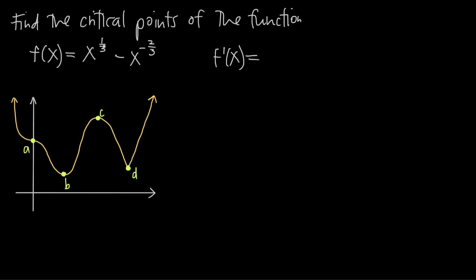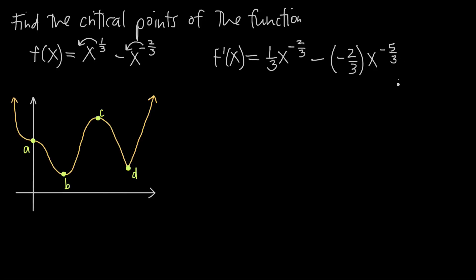When we take the derivative of x to the 1/3rd, we bring the exponent down in front, so we get 1/3 times x, and then subtract one from the exponent: 1/3 minus 1 gives us negative 2/3. For the derivative of negative x to the negative 2/3, we keep the minus sign, bring the negative 2/3 exponent down, giving times negative 2/3 times x to the negative 5/3. The negatives cancel, giving us f prime of x equals 1/3 x to the negative 2/3 plus 2/3 x to the negative 5/3.